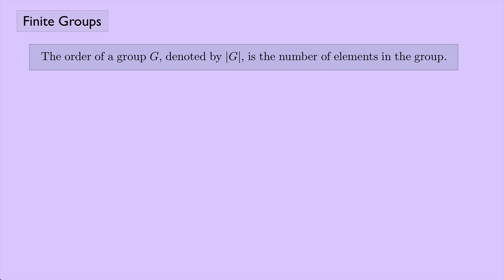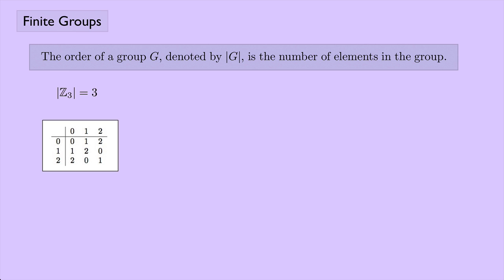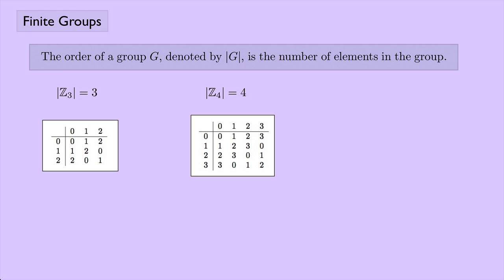How do we define the order of a group? The order of a group — denoted by vertical bars around G — is the number of elements in the group. For the group of addition mod 3, the order is 3, as seen in the group table. Addition mod 4 has order 4, with elements 0, 1, 2, and 3. In general, Zₙ, where n is any integer 1 or larger, will have an order of n.